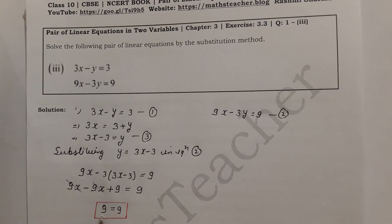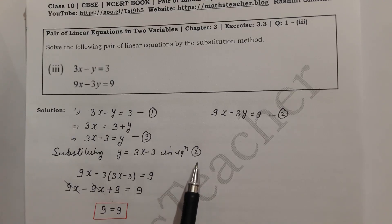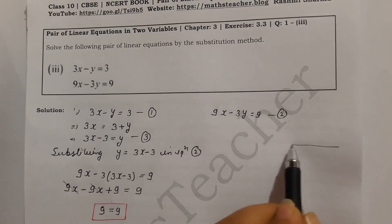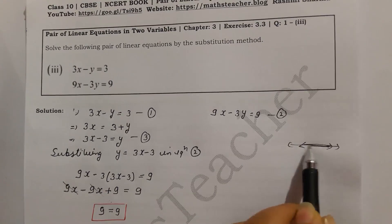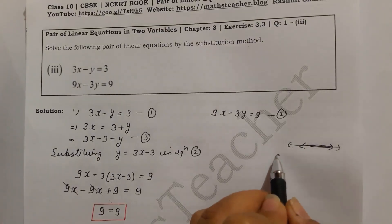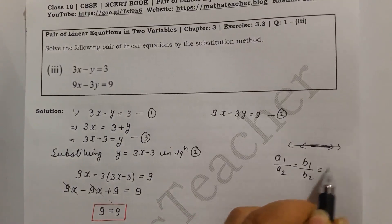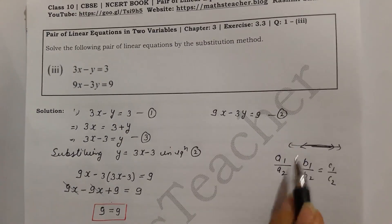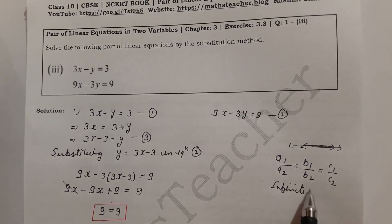This outcome occurs because, as I covered in Exercise 3.2, there are three types of lines: parallel lines, intersecting lines, and coincident lines. Coincident lines overlap each other. For coincident lines, the condition for infinite solutions is: a1/a2 equals b1/b2 equals c1/c2. This gives us infinite solutions, and these two equations represent the same line.